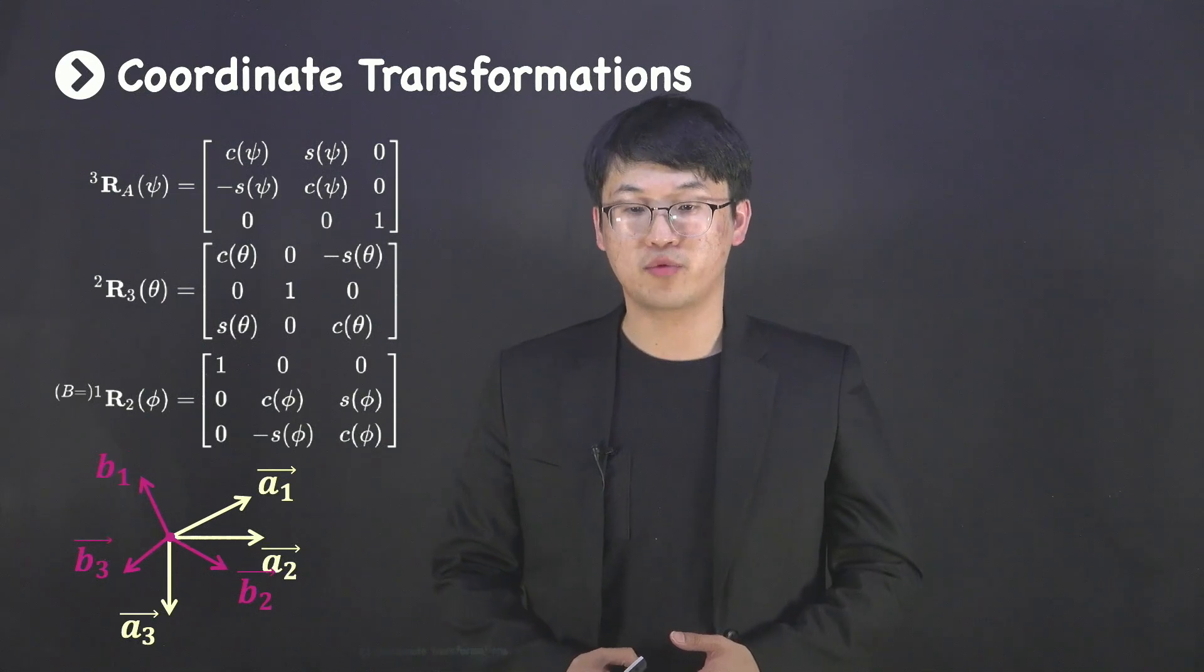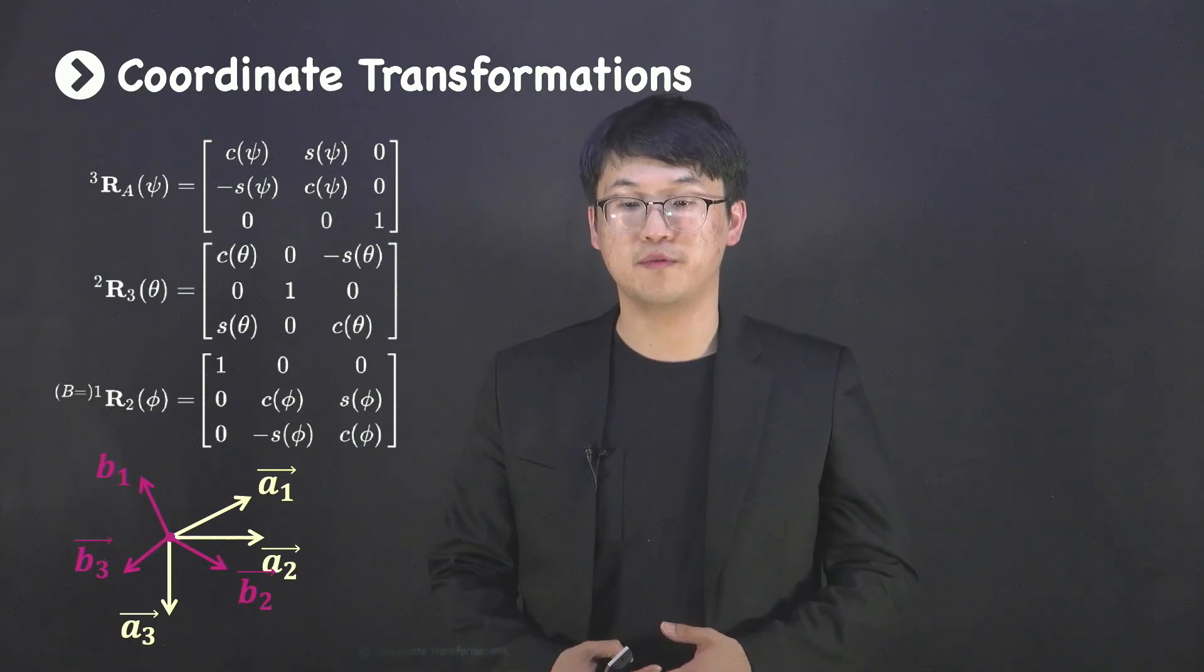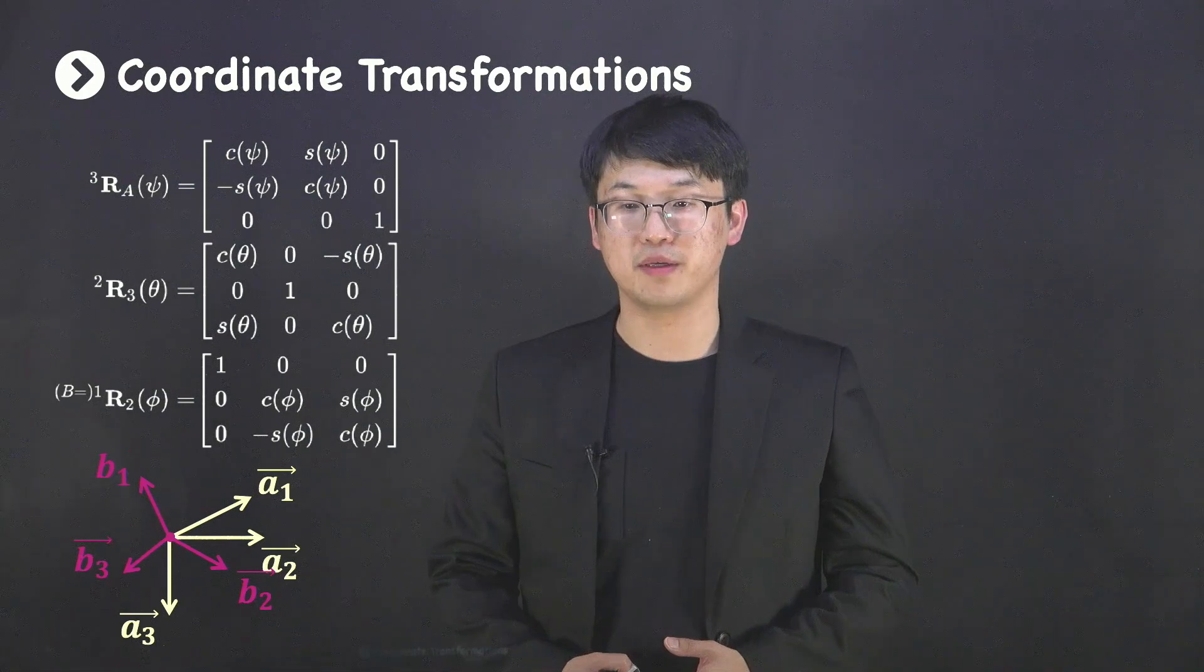Lastly, rotation by roll angle, φ, about the first axis completes the coordinate transformations.